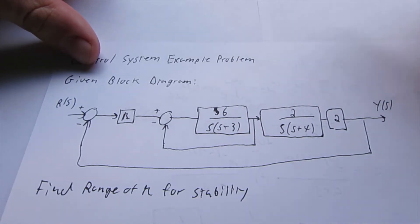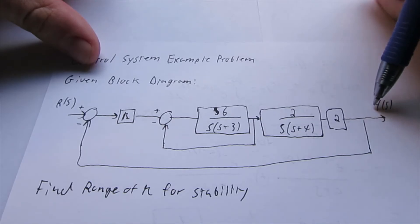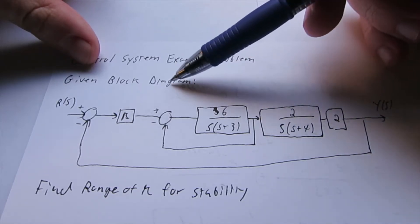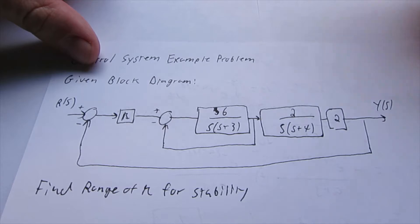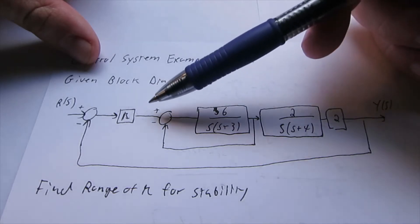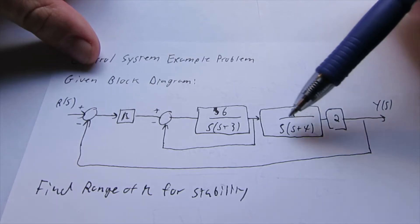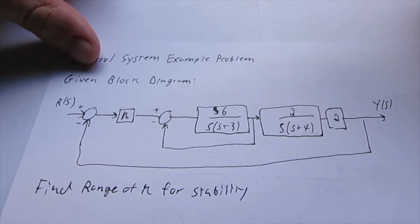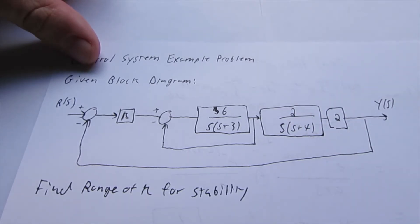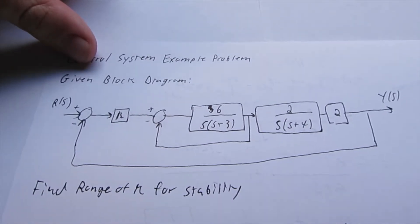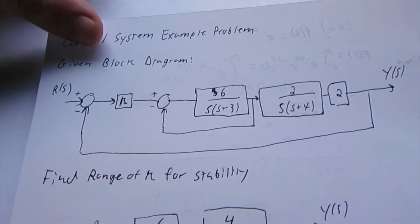So immediately, what do you need to know? You want to find the full closed loop transfer function of Y(s) over R(s), and then if we can find that denominator, we can use Routh-Hurwitz criterion to determine that range of stability for K. So we want an input of K so that this is a stable system. But first we need to reduce our block diagram so we can find that transfer function.